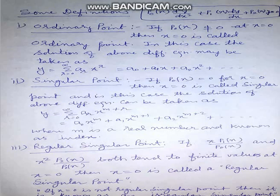Singular point: If substituting x = 0 makes the value of p0 equal to zero, then such a point is called a singular point. In this case the solution is y = Σ aᵣ x^(m+r), which can be expanded as a0·x^m + a1·x^(m+1) + a2·x^(m+2) and so on. Here m is a real number known as the index.